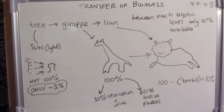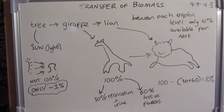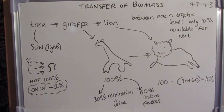Earlier I said I would explain why you don't see many quaternary consumers. Because only 10% of biomass is available at each successive trophic level, by the time you reach trophic level four or higher there is only a very small portion of energy available — not enough to sustain organisms at that level. This is why most food chains only go as far as tertiary consumers.